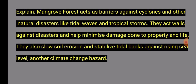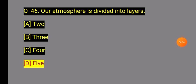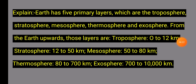Question 46: The atmosphere is divided into how many layers? Option: Five layers. Question 46 Explanation: The Earth has five primary layers: the troposphere, stratosphere, mesosphere, thermosphere, and exosphere. From the surface upward: troposphere 0–12 km, stratosphere 12–50 km, mesosphere 50–80 km, thermosphere 80–700 km, and exosphere 700–10,000 km.